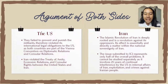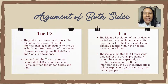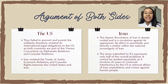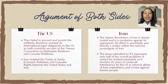Iran countered the argument by saying that the ICJ cannot and should not take cognizance of the case which the U.S. submitted. The Islamic Revolution of Iran is deeply rooted and is a revolution against its oppressors, and its effect is essentially a matter within the national sovereignty of Iran. The issue submitted to the ICJ represents only half of the overall problems, as it involves 25 years of continual U.S. interference in Iran's internal affairs, exploitation, and crimes against the Iranian people.